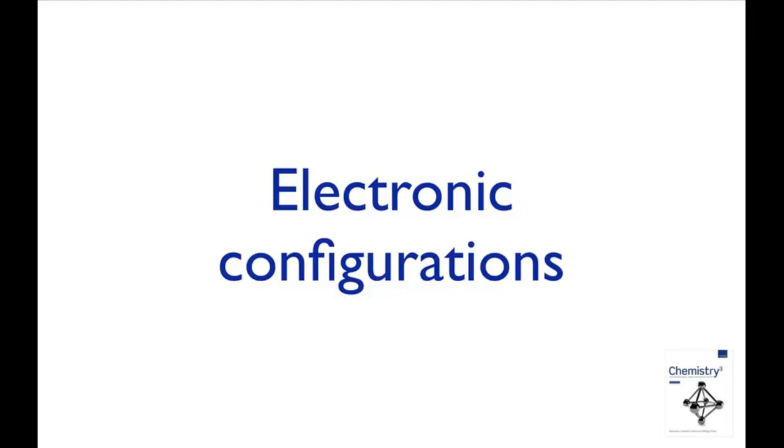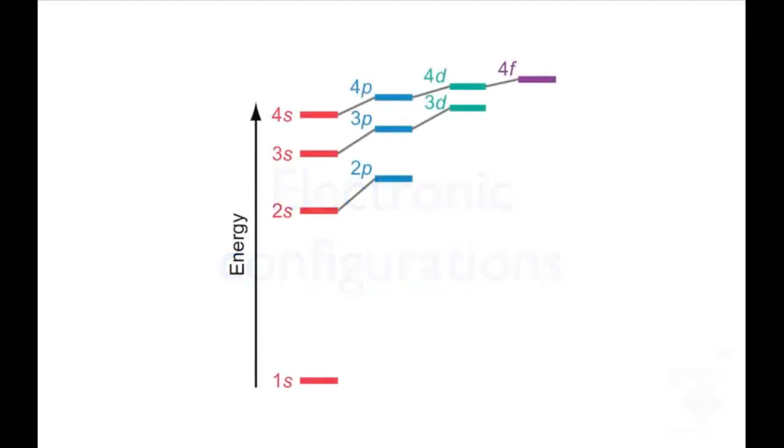To work out the electronic configuration of an atom, you need to know the order of the atomic orbitals in terms of their energies.